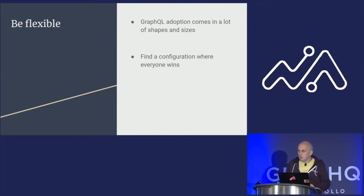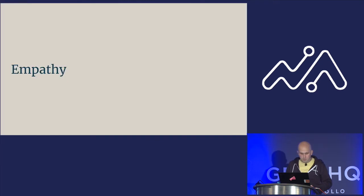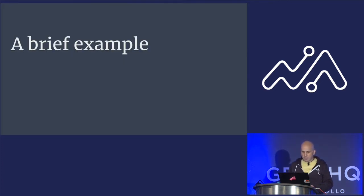Everybody wins — that's the sweet spot of a good deal. Either nobody feels like they lost or everybody feels like they lost. If you walk out of a negotiation without either of those outcomes, then you have lost. Now we're going to move on to the second tool in our toolbox: empathy. It's a bit of a buzzword lately, but I think it's a pretty important concept and I want to dig into it with an example.